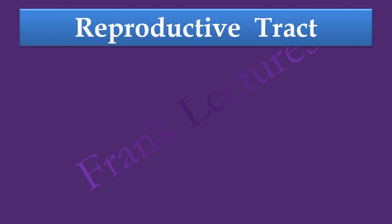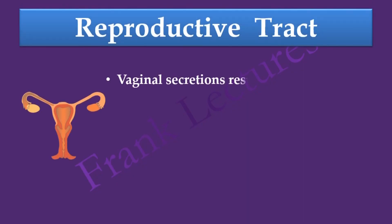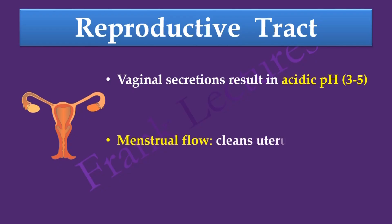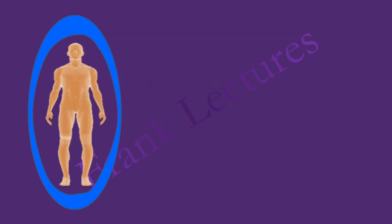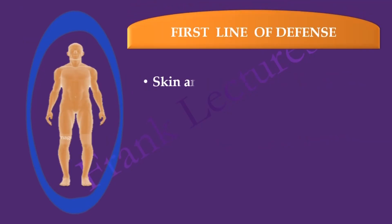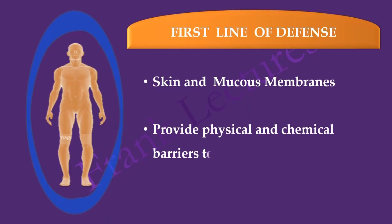In the female reproductive tract, vaginal secretions result in an acidic pH between 3 and 5, which is inhibitory to microbial growth. Menstrual flow also cleans the uterus and vagina. In conclusion, the first line of defense is formed by skin and mucous membranes, which together provide physical and chemical barriers to pathogens.